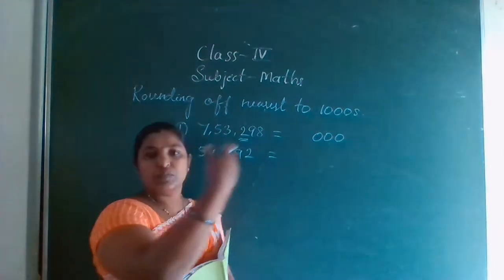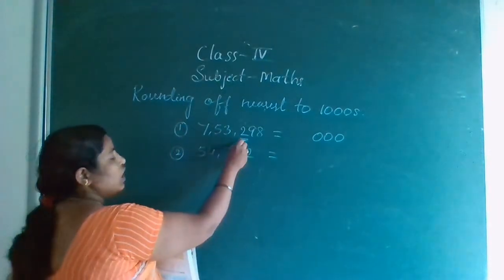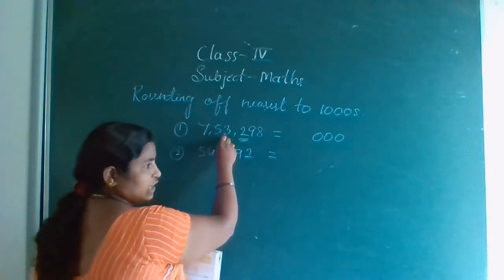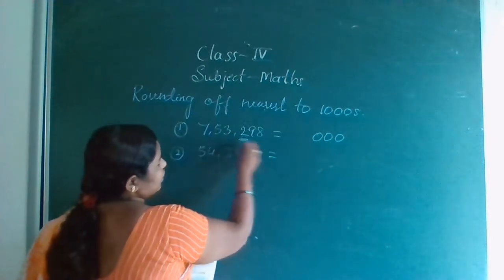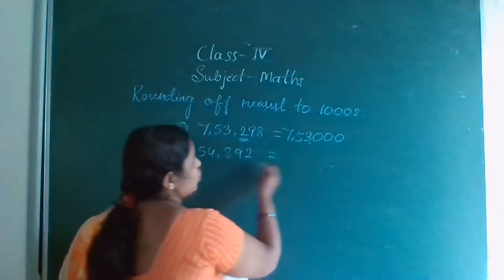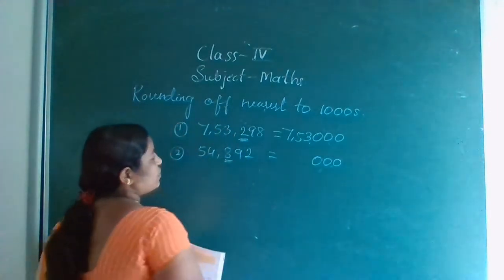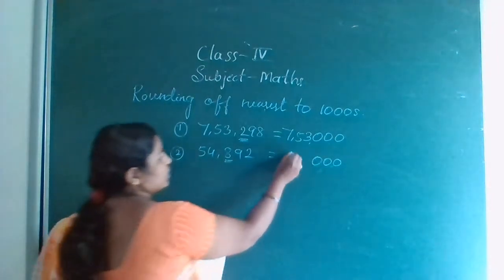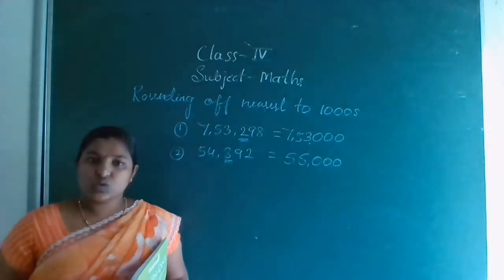So the 100's place is 2. If the number is more than 5, the next number you should increase by 1. But now it is less than 5, so that is 2 — next number, no need to change anything. Write it as it is, and write 3 zeros. Then look at 100's place of 54,892. This is more than 5 — it is 8 — so next number increase by 1. Result: 55,000. This is nearest to 1000.